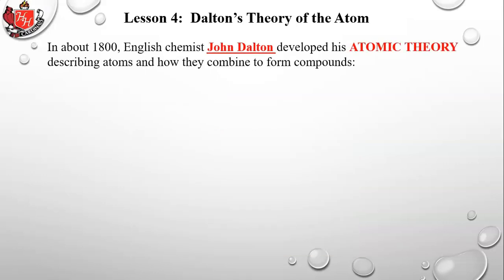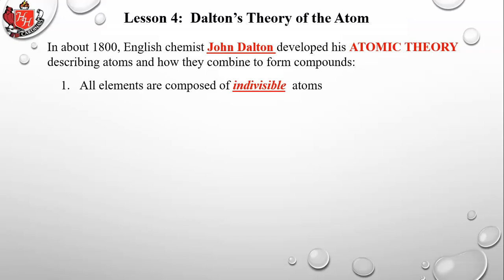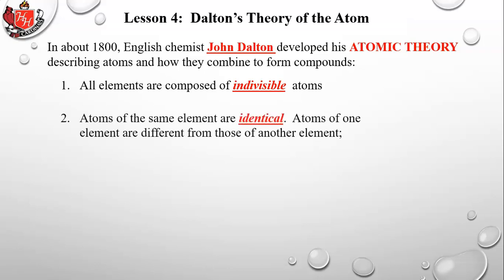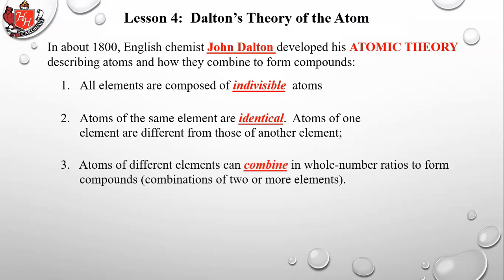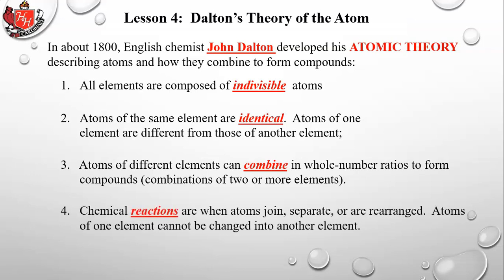In about 1800, English chemist John Dalton developed his atomic theory describing atoms and how they combine to form compounds. His first postulate: all elements are comprised of indivisible atoms. Second: atoms of the same element are identical; atoms of one element are different from those of another. Third: atoms of different elements can combine in whole number ratios to form compounds. Fourth: chemical reactions are when atoms join, separate, or are rearranged.